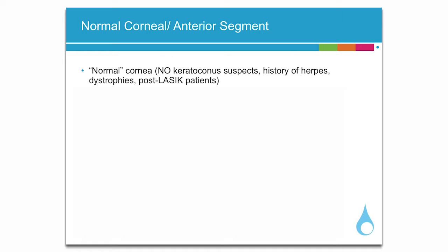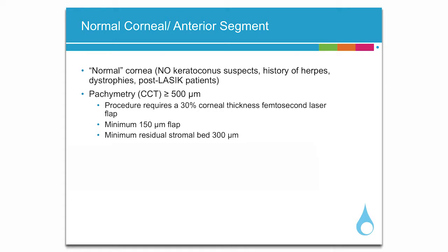Good candidates for Raindrop inlay implantation cannot be keratoconus suspects, cannot have a history of herpes or dystrophies, nor previous LASIK or PRK surgeries. The procedure requires a femtosecond flap that is created at 30% of total corneal thickness, with a minimum of 150 microns, leaving the stromal bed with a minimum of 300 microns.